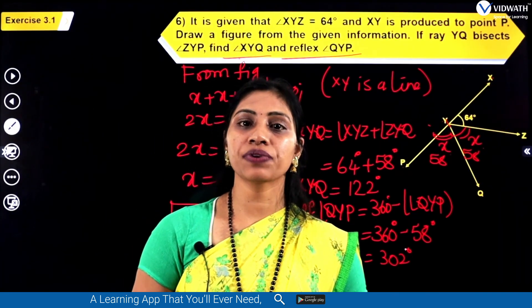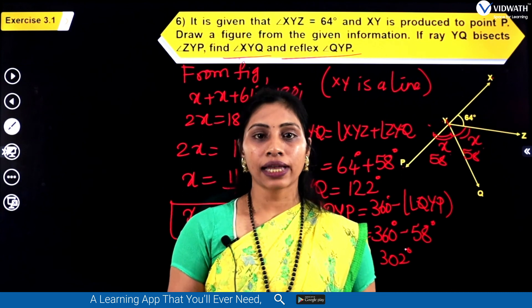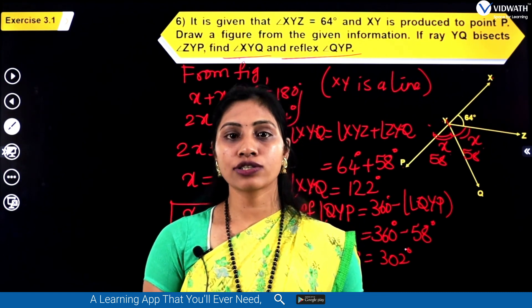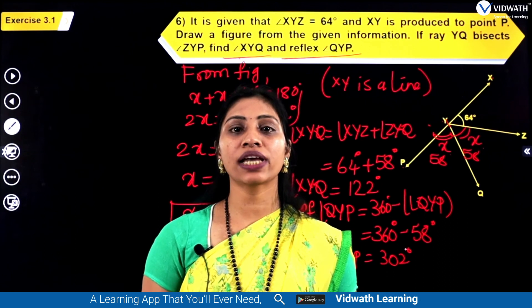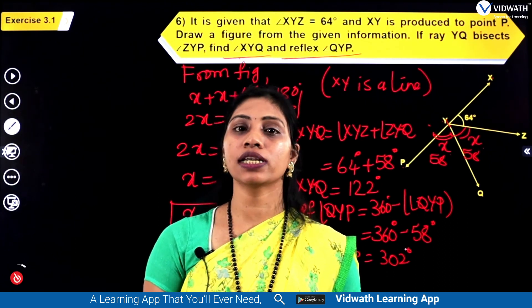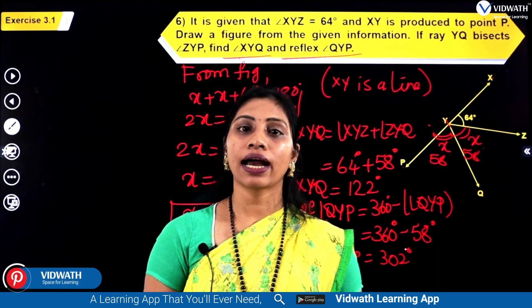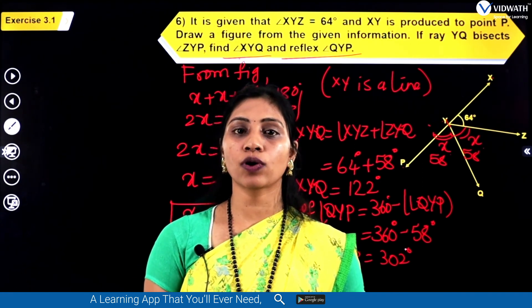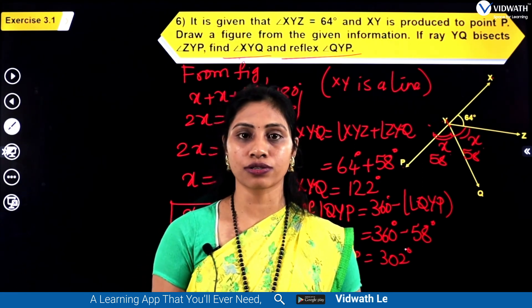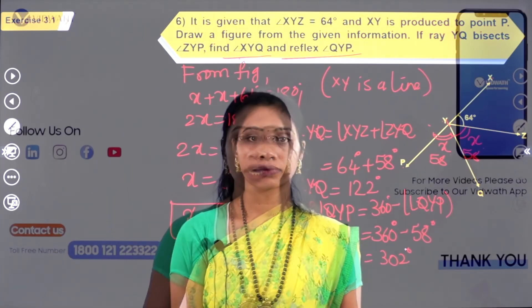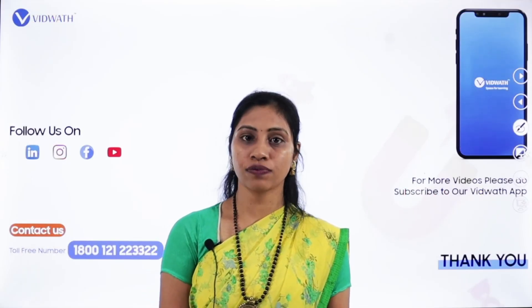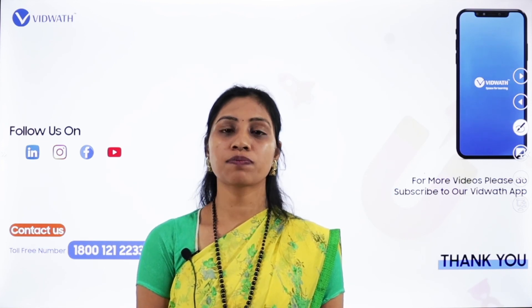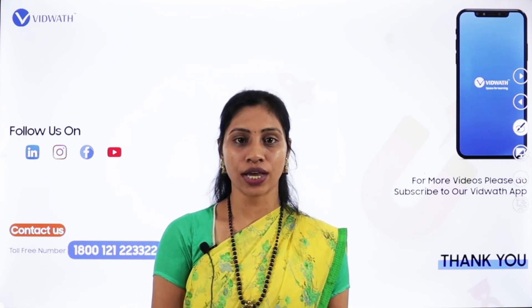In today's class we have learnt about lines, parallel lines, and that when two lines intersect at one point, vertically opposite angles are equal. We have also learnt about pairs of angles and used this knowledge to solve several questions. I hope you enjoyed today's session. If you want more conceptual videos like this, do subscribe to Vidwat Learning App and share it.